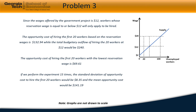In the third problem, the government wants to hire 20 unemployed workers. Since the wage offered by the government project is 12 dollars, only workers whose reservation wage is equal to or below 12 dollars will apply to be hired. The opportunity cost of hiring the first 20 workers based on the reservation wage is 132.94 dollars, while the total budgetary outflow of hiring 20 workers at 12 dollars is 240 dollars.